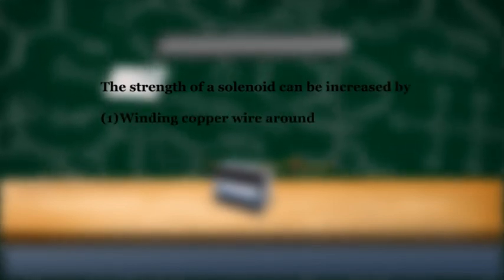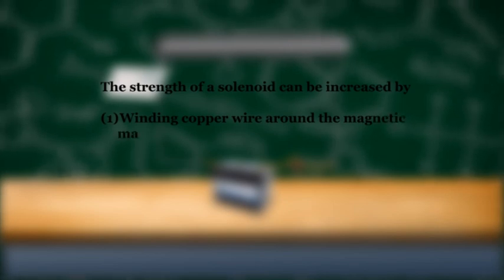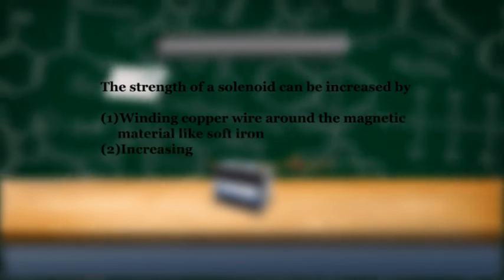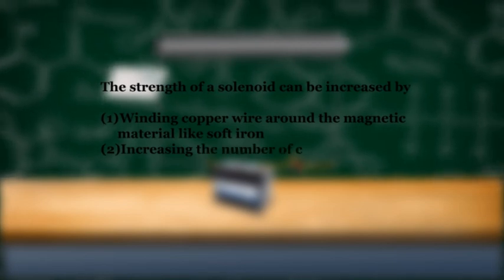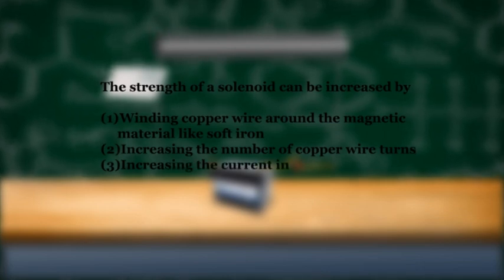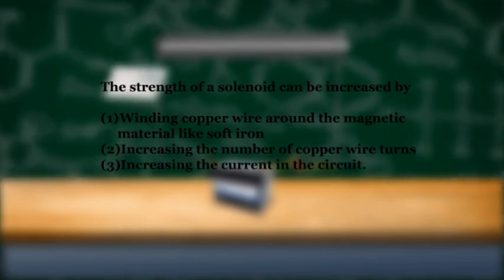The strength of a solenoid can be increased by: 1. Winding copper wire around the magnetic material like soft iron. 2. Increasing the number of copper wire turns. 3. Increasing the current in the circuit.